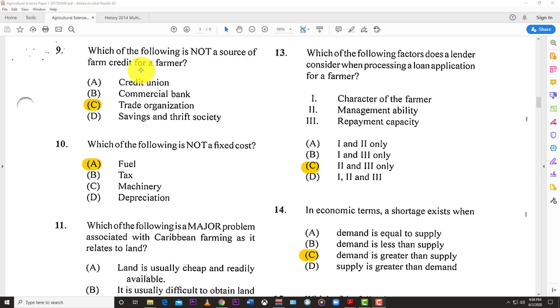Number nine: Which of the following is not a source of farm credit for a farmer? The best answer is C, trade organization. You can go to the credit union, commercial bank, and savings and thrift societies to get money, but trade organizations don't give you money.